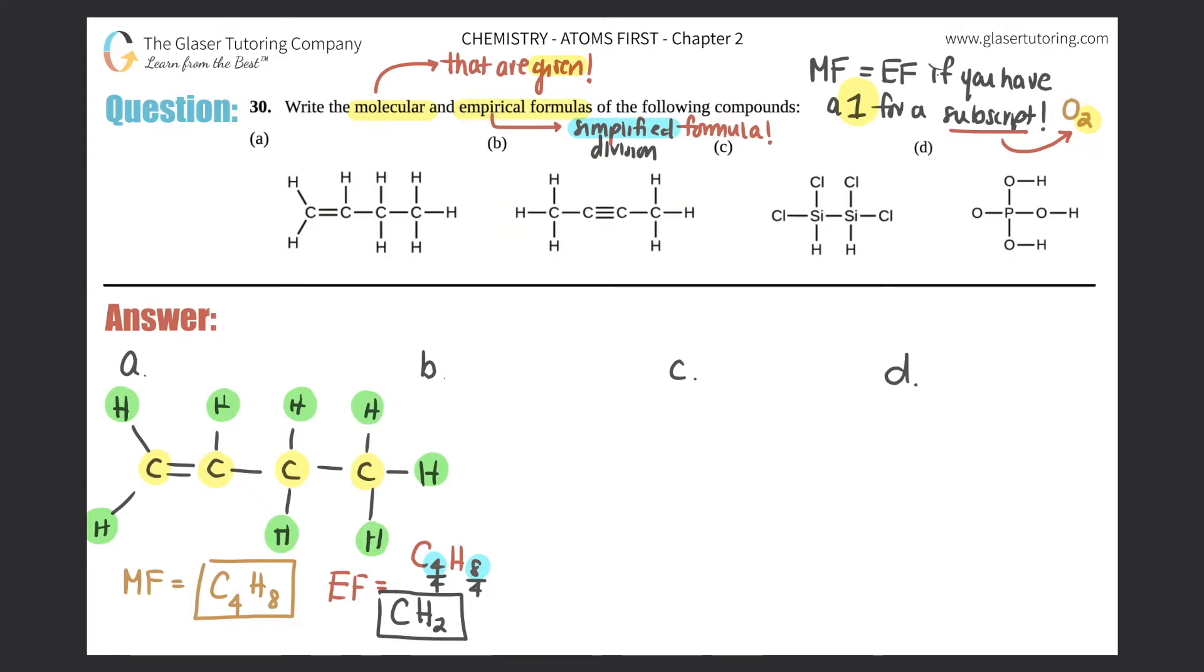So that's your empirical formula. So that's your molecular formula and your empirical formula for the first one. Check that one off. So now it should get a little bit easier. So let's write out b. I'm gonna put b up here: H-C-C triple bond C, there's an H, H, and an H, C-H.